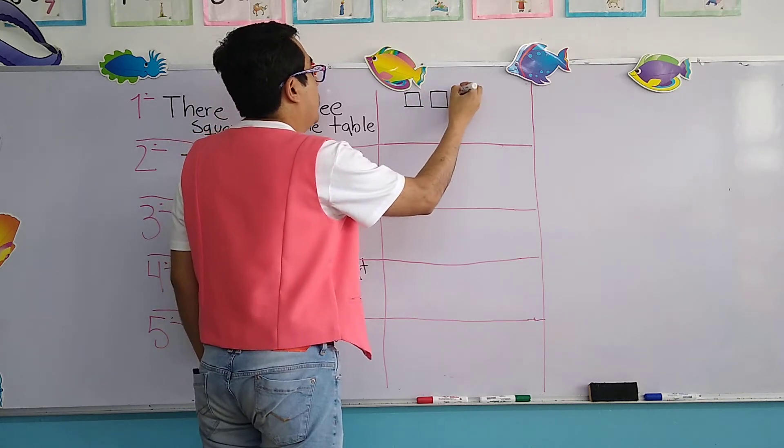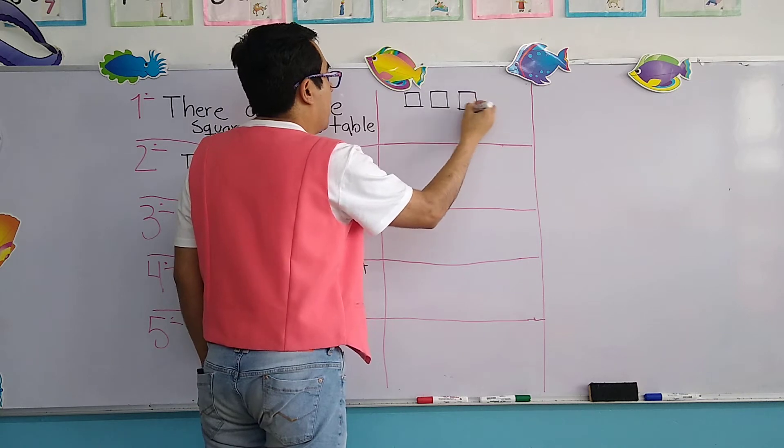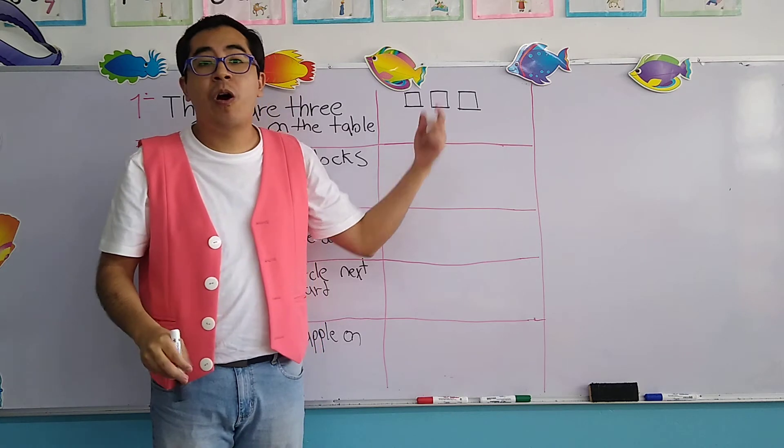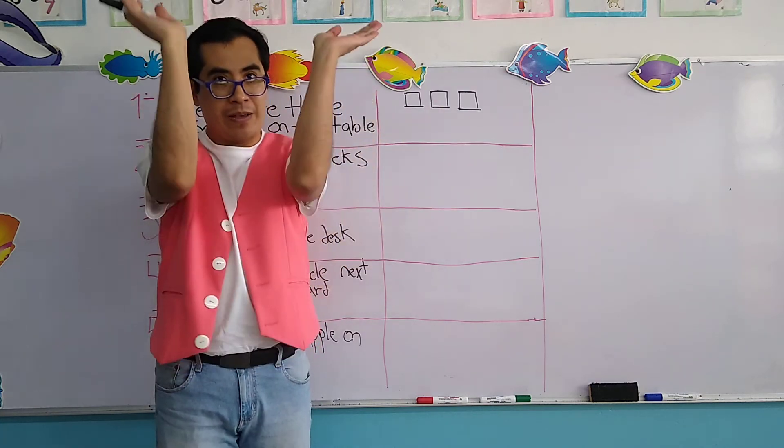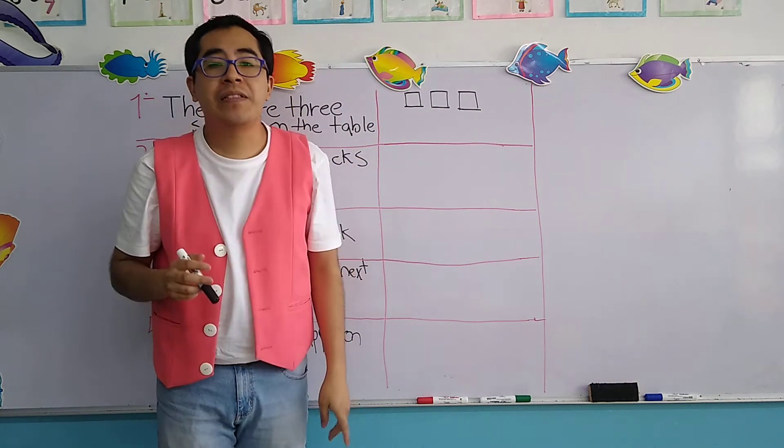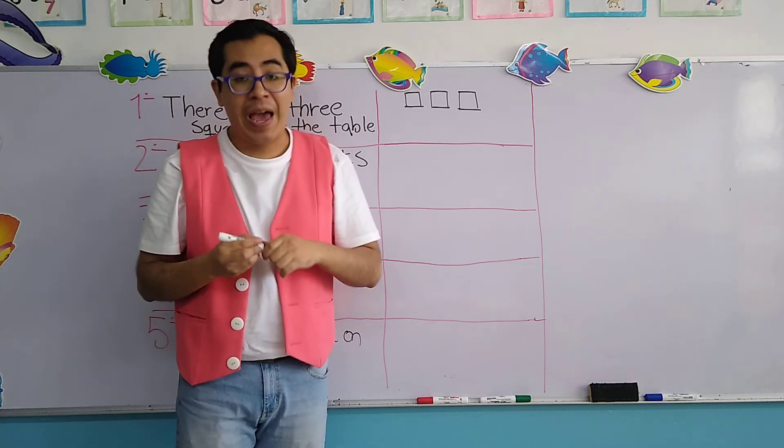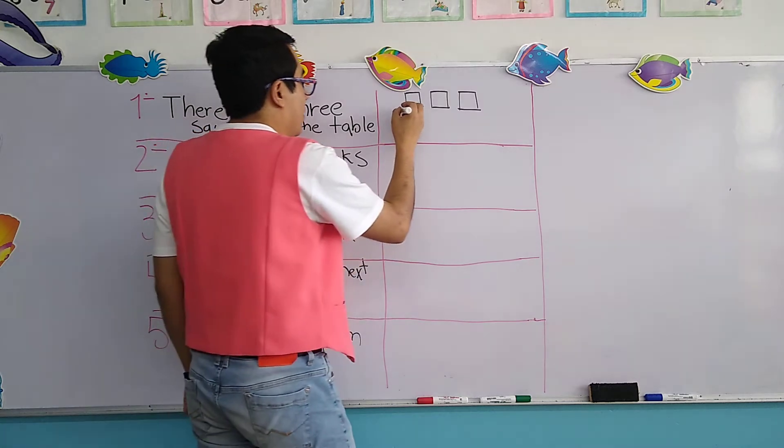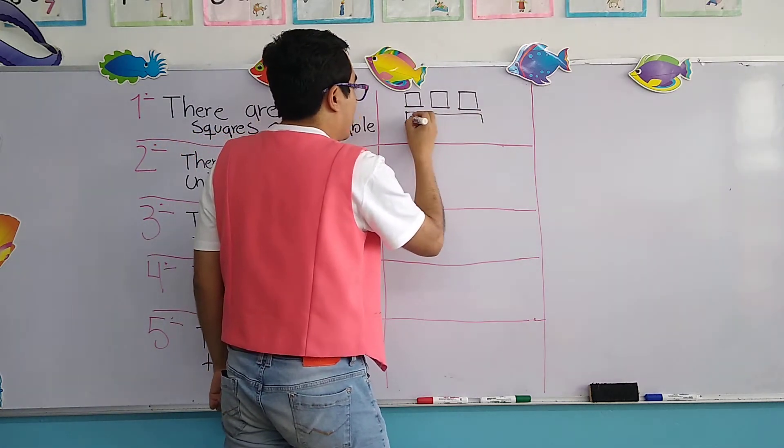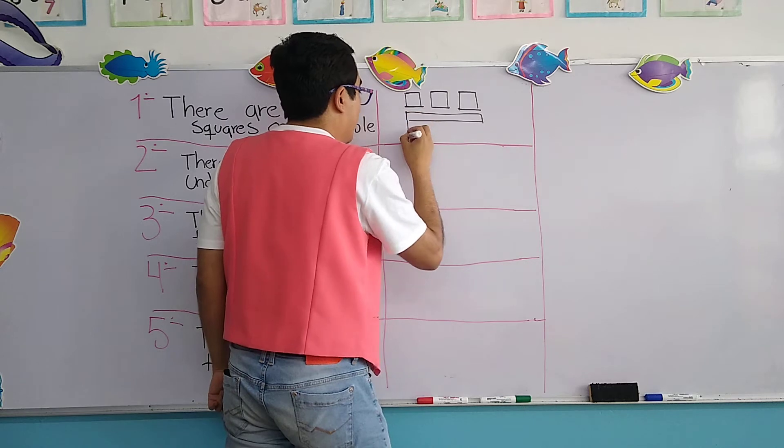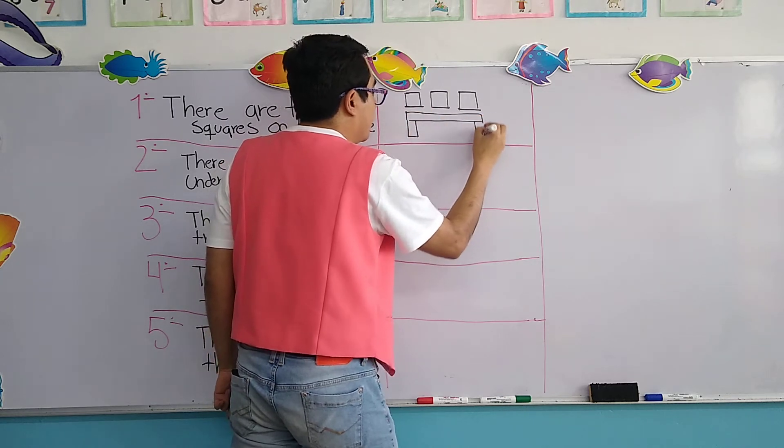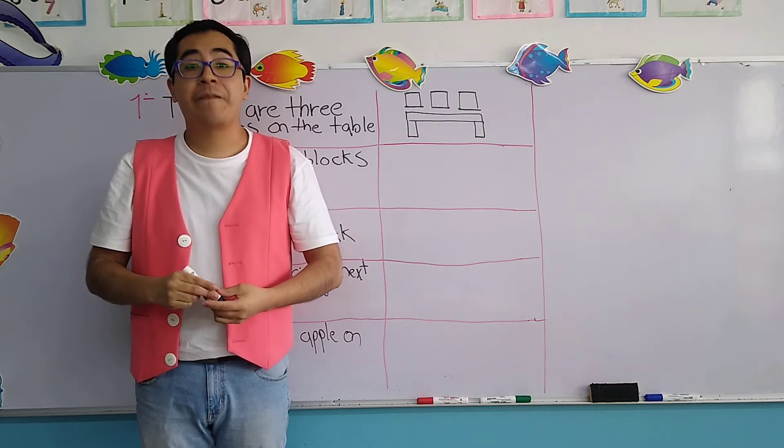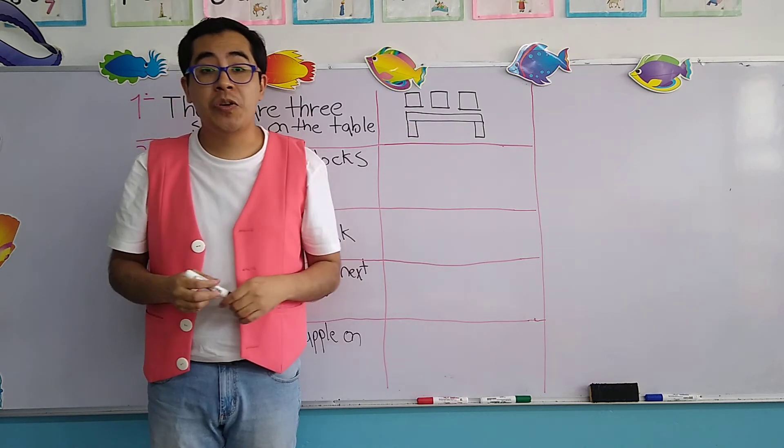One, two, three. We have three squares. Now, these squares are on, arriba, on the table. Arriba de que? Exactly. Remember, table in Spanish means mesa. On the table. Here is our little table and the legs. You see? There are three squares on the table. That's the first sentence. Let's continue with number two.